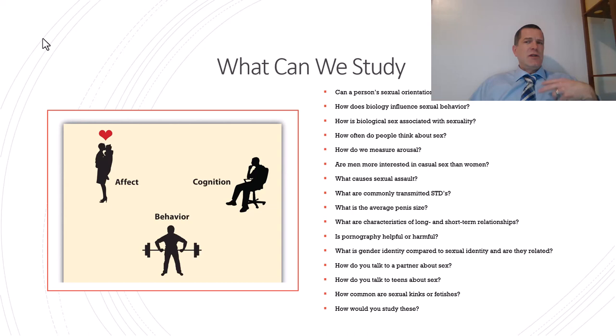For example, can a person's sexual orientation change over time? How does biology influence sexual behavior? How is biological sex specifically associated with sexuality? Are there disparities between sexes? How often do people think about sex? We can measure that quantitatively by asking them to fill out a survey, or we can go out and ask them open-ended questions in a qualitative survey.